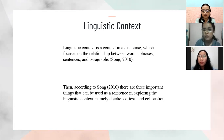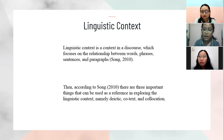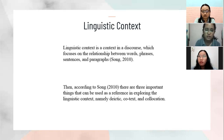To determine the meaning of a word, it is necessary to know whether it is a verb, noun, adjective, or adverb, and then whether it functions as a subject, predicate, or complement. This information provides essential clues to the meaning of a text, but is not sufficient to provide a full understanding of utterances. According to Song (2010), there are three important things that can be used as a reference in exploring the linguistic context: deixis, cotext, and also collocation.